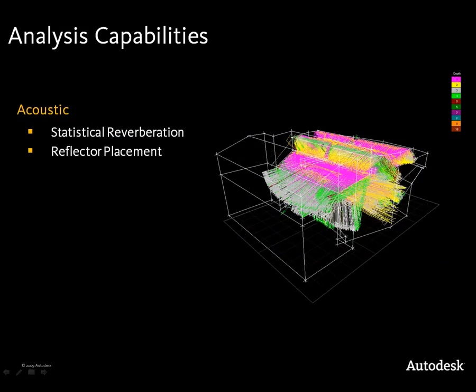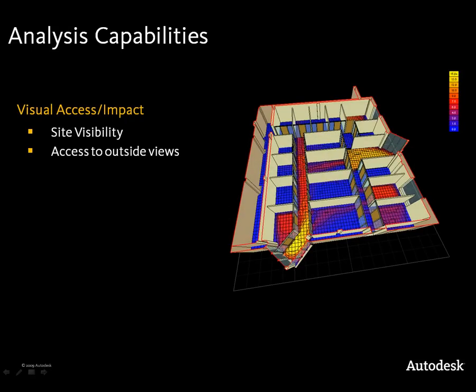With acoustic analysis, you can examine how sound moves around a space — where are you getting problems? Where is echo being caused? How can you position reflectors to best move that sound around the space? And also with visual access and impact — what is the impact of your development visually on others? From a point in the city, how much of your building can you see? Can you see a national monument from certain parts of your building? What is the access to outside views like? This gives you a good understanding of perhaps the quality of life within the building itself.